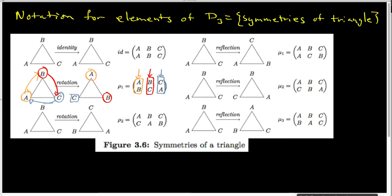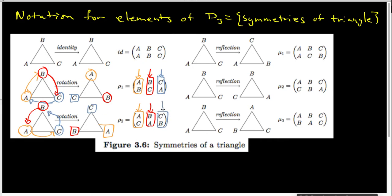Let's start with the second one. A starts here and ends there, so A went to the C spot — that's exactly what this first column indicates. B starts here and lands there, so B winds up in the A slot — that's what this column indicates. And C starts here and ends here, so C lands in the B spot, and that is indeed that column.